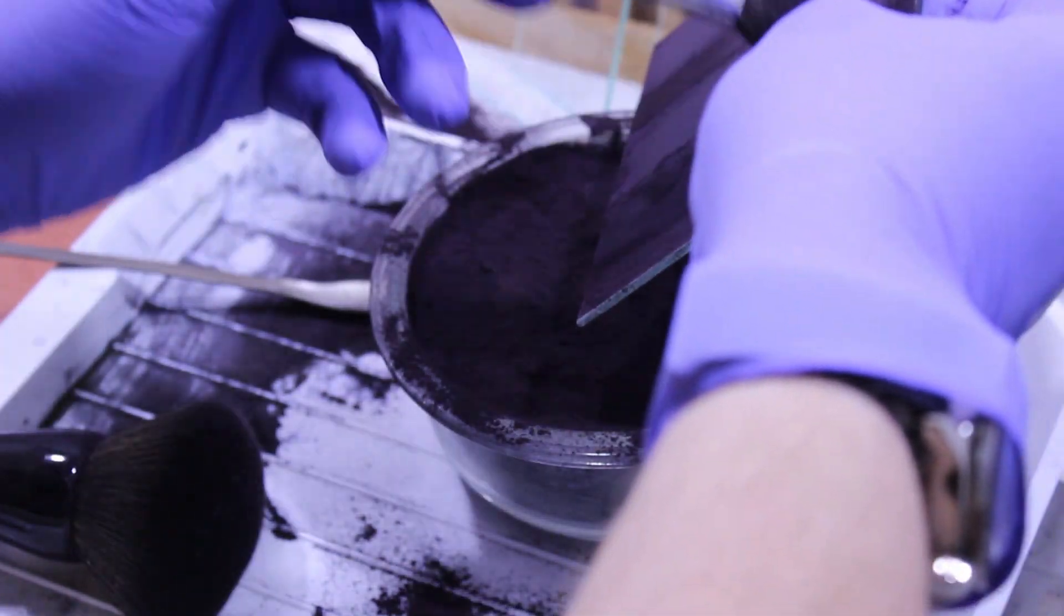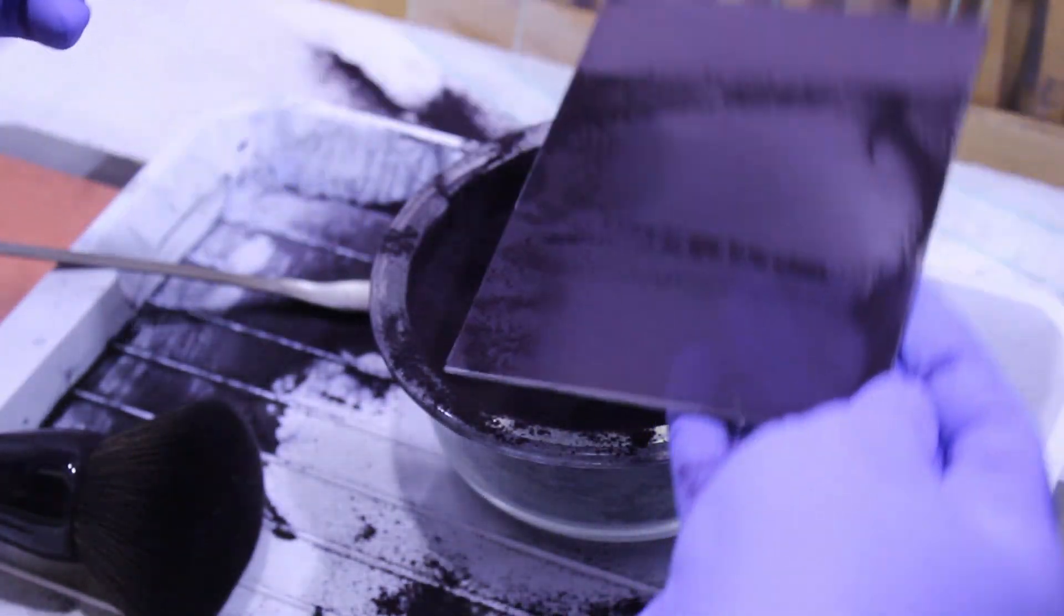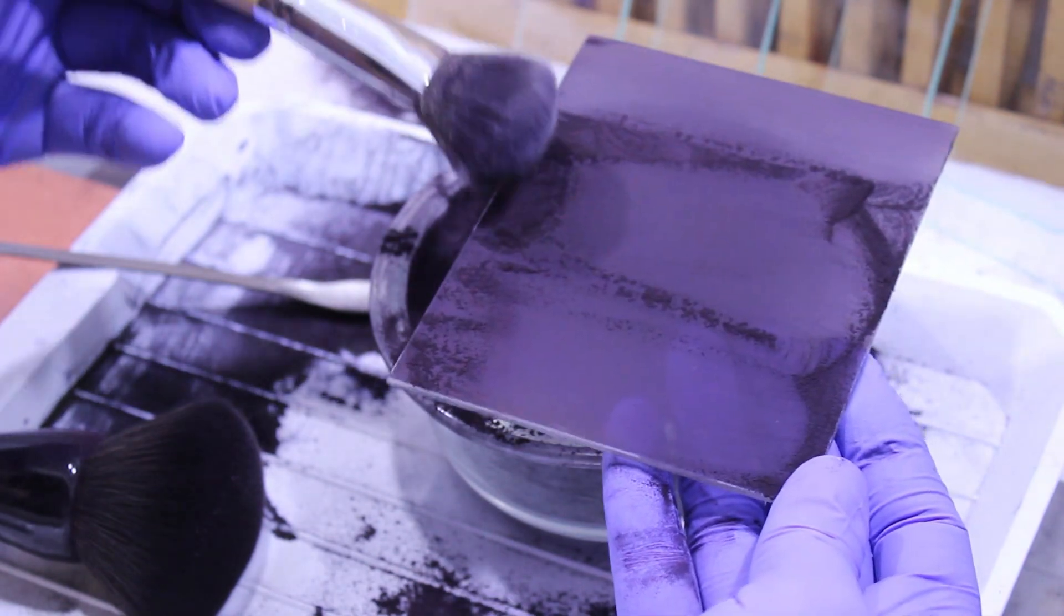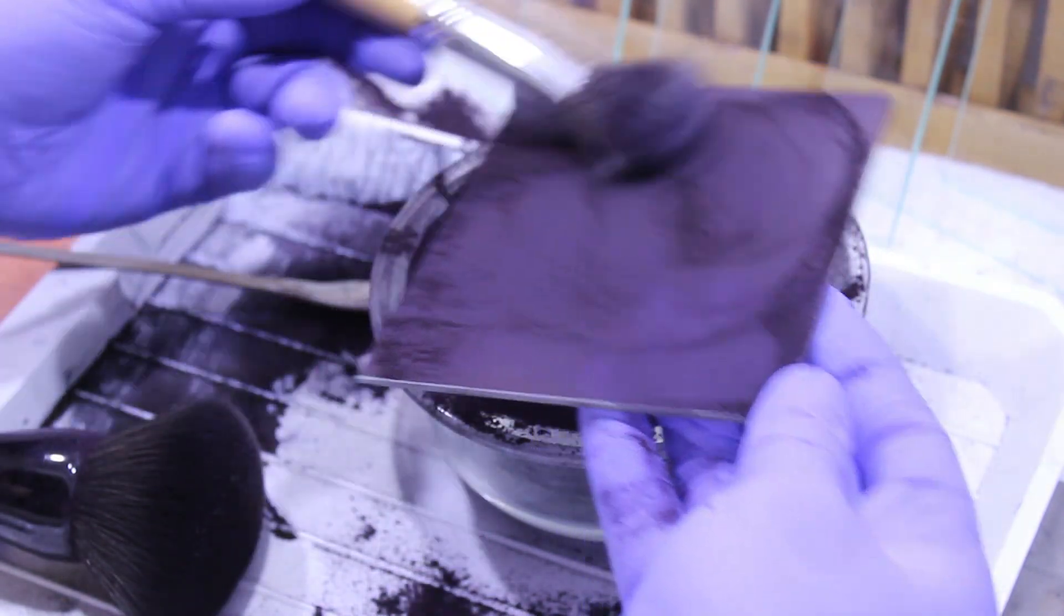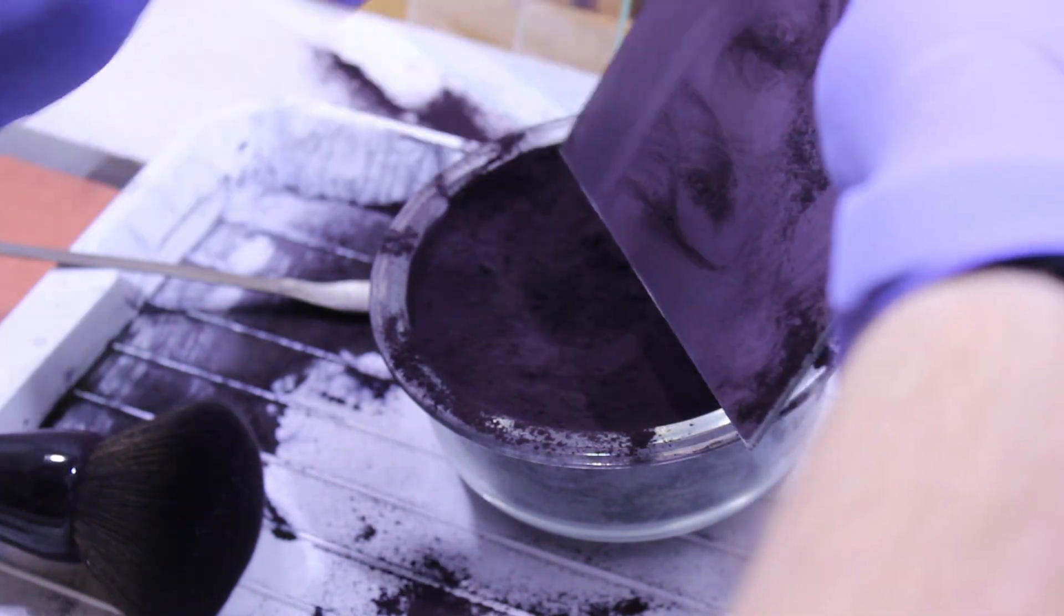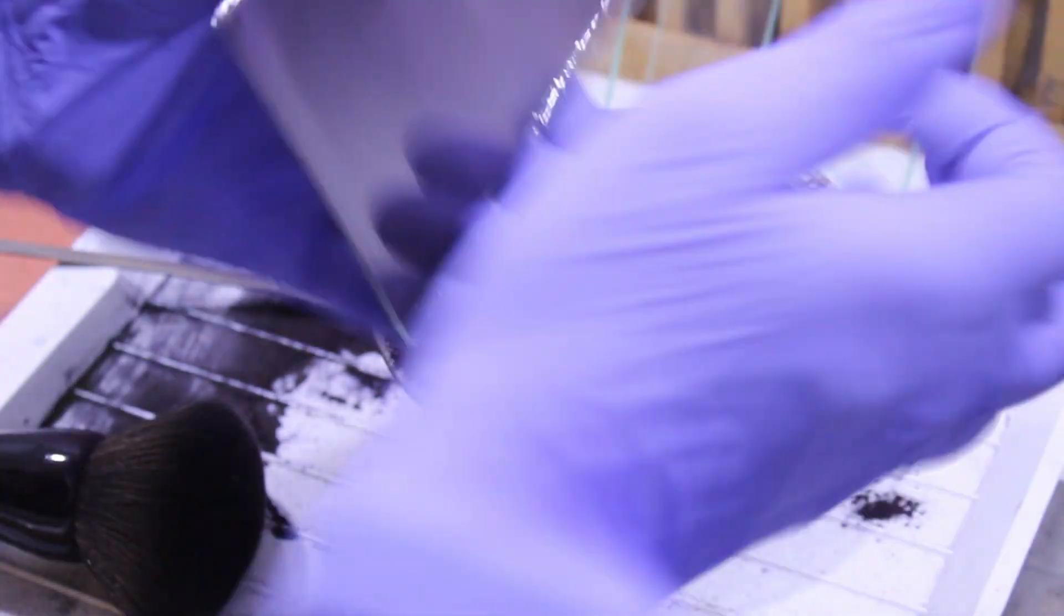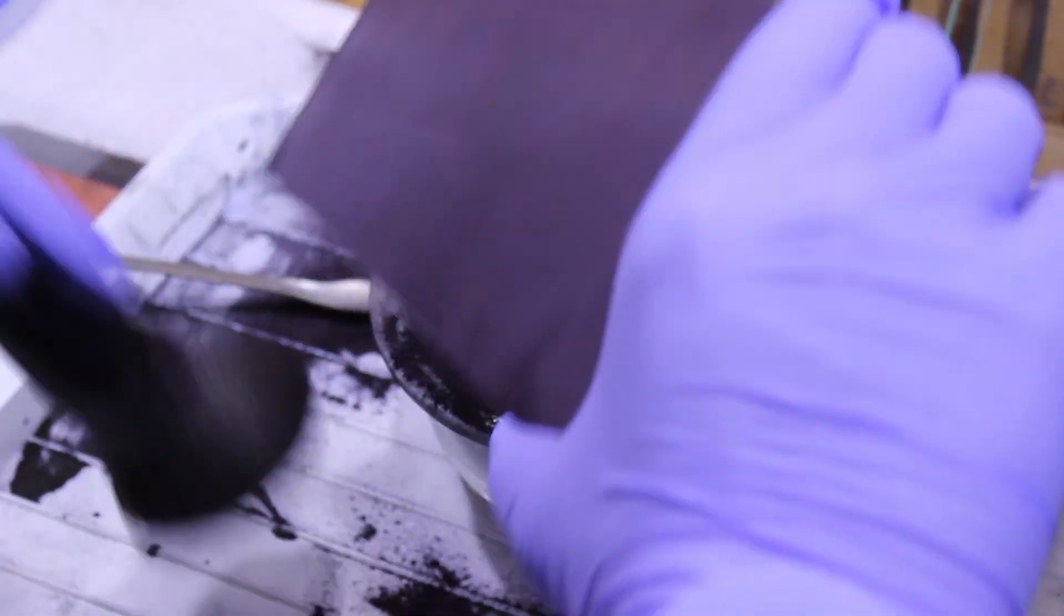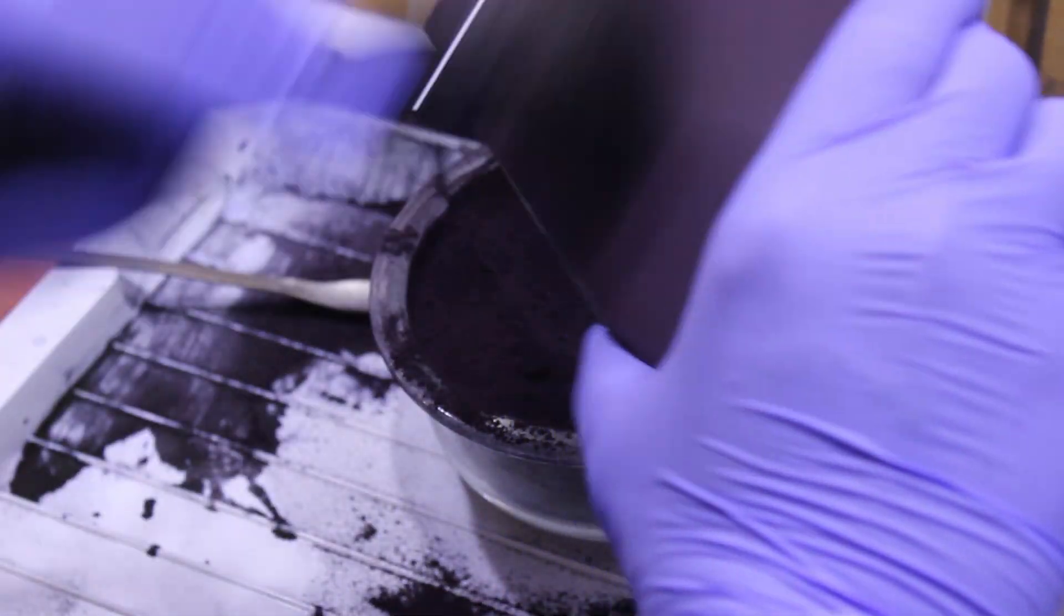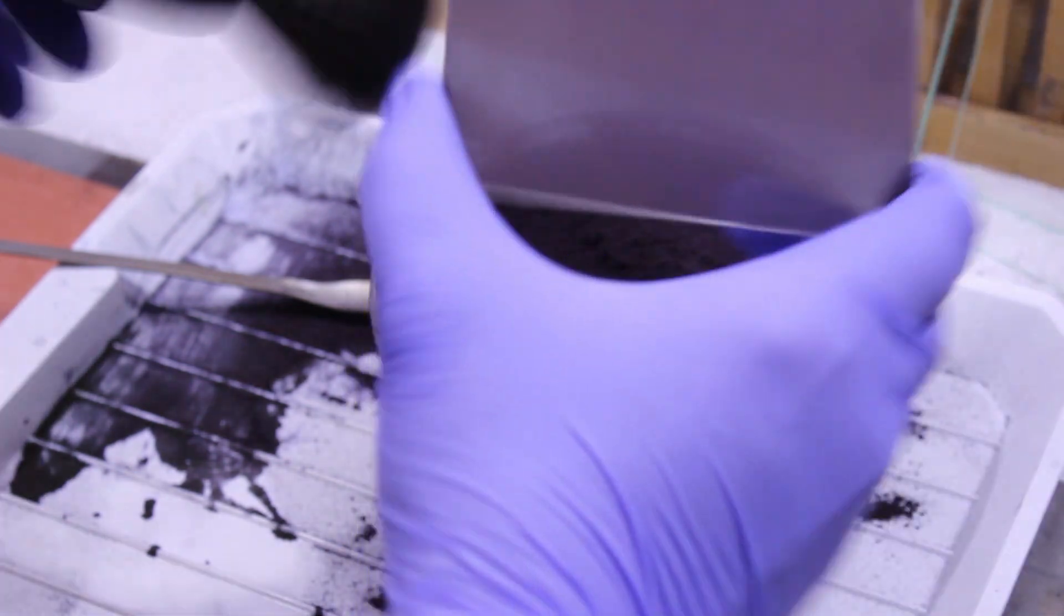When the whole plate is covered, the excess is then brushed back into the container. I use a second brush specifically to remove the final grains, which makes it a lot easier to clean off the excess.